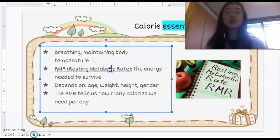All of that comes into play when you're trying to figure out your RMR, the resting metabolic rate. And this is what you're going to be calculating today. So the RMR tells us basically how many calories we need every single day.